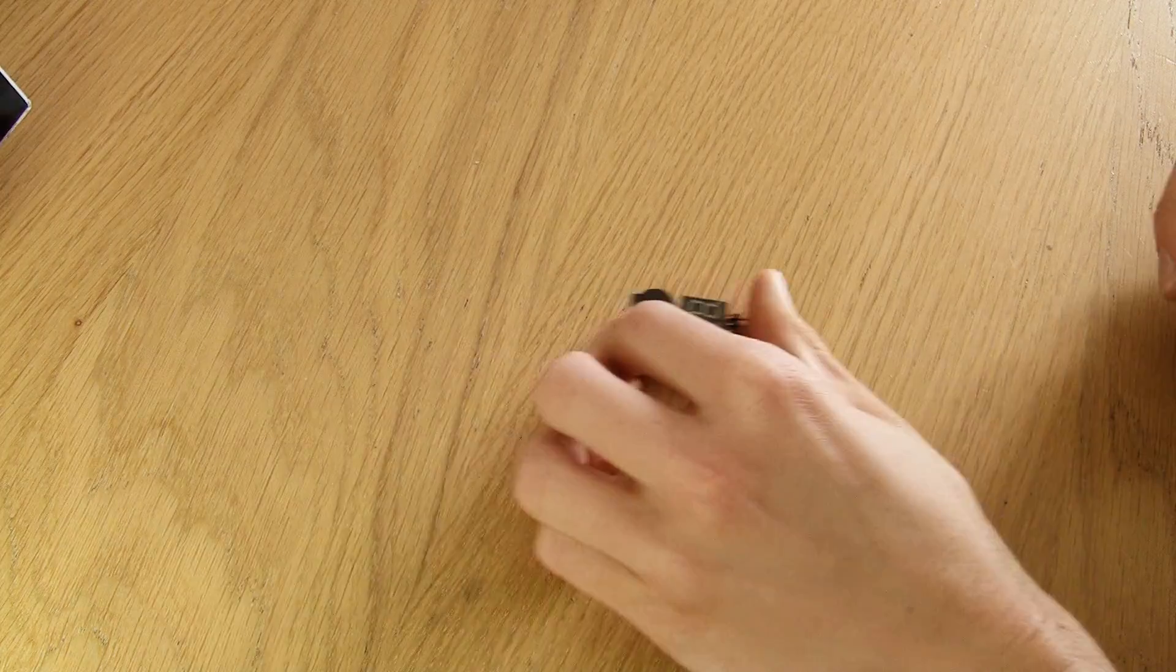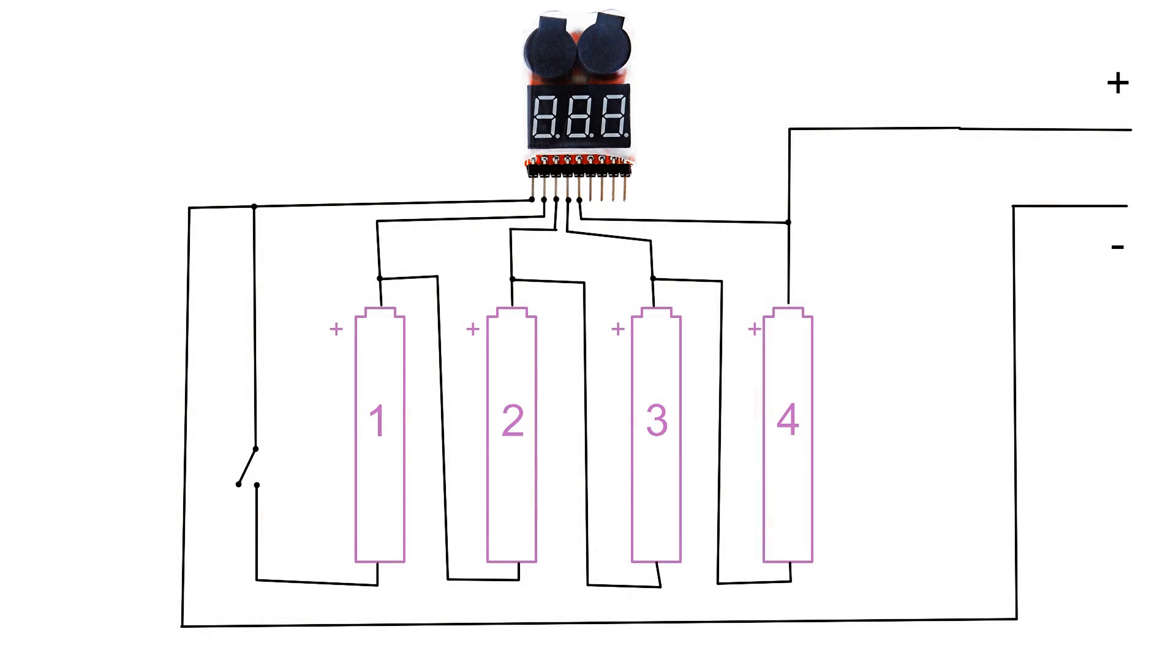We'll put the batteries aside for now and get our LiPo protector. So what we're going to do is create this circuit. The batteries are connected in series to equal 16 volts. The ground of the battery alarm is connected to the ground of battery 1. Each of the subsequent connectors are connected to the positive side of each battery in order.